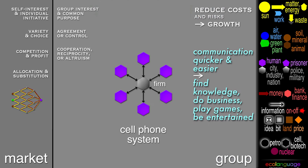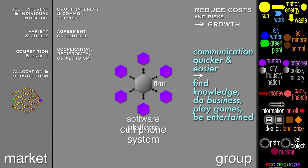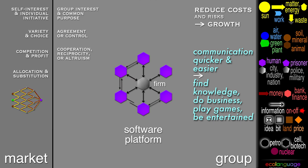A cell phone system makes communication quicker and easier. A conversation between two people is really going through the center firm, although it seems like it is just between them. Adding software can make it a platform to find knowledge, do business, play games, and be entertained.